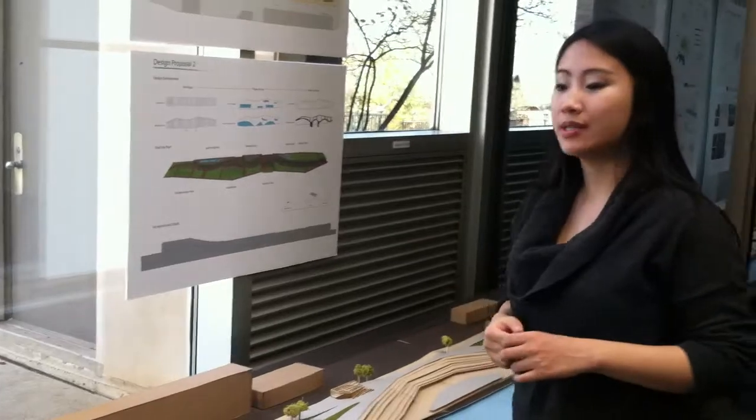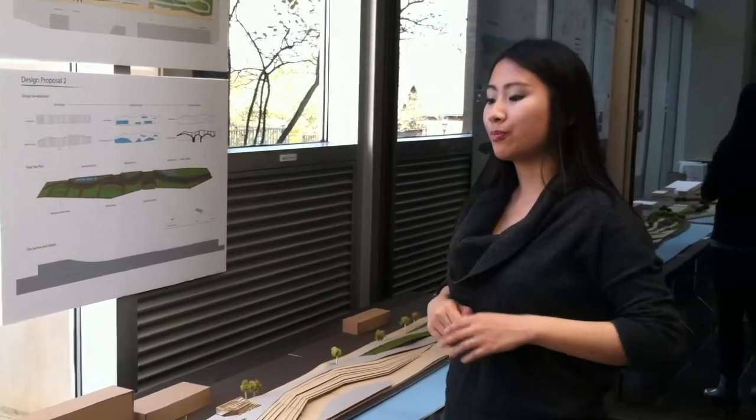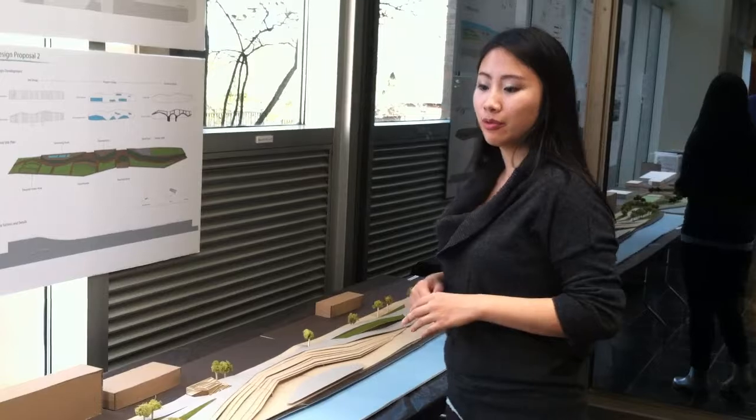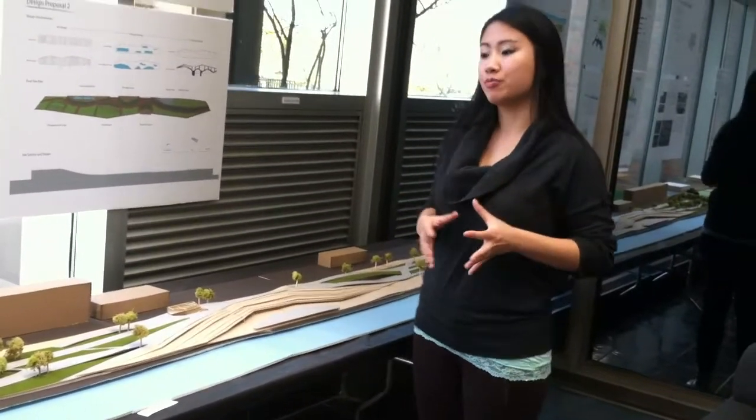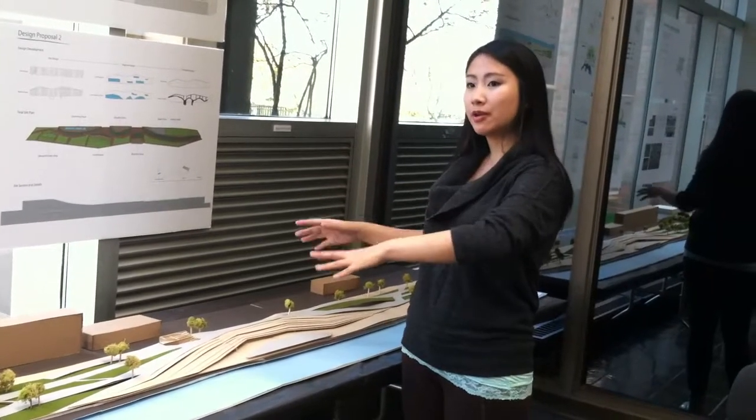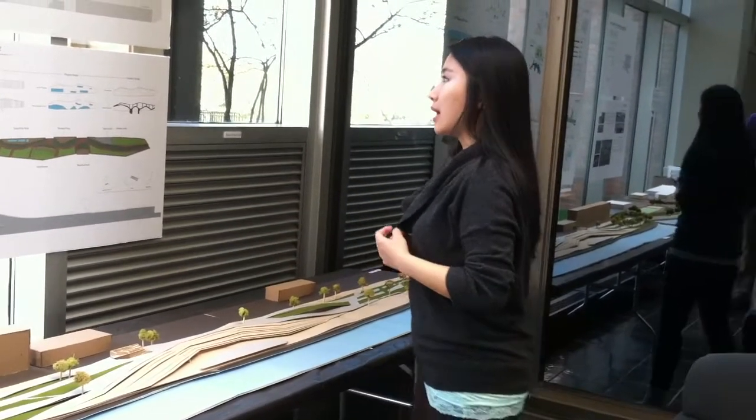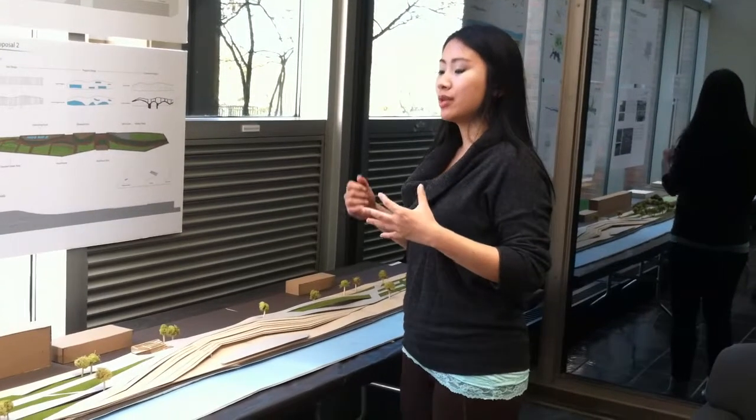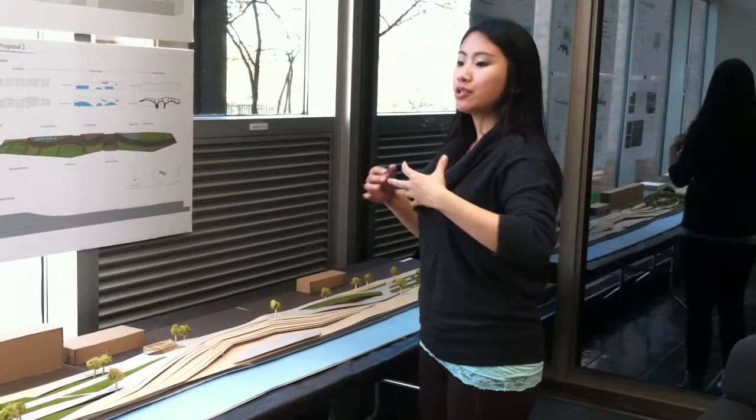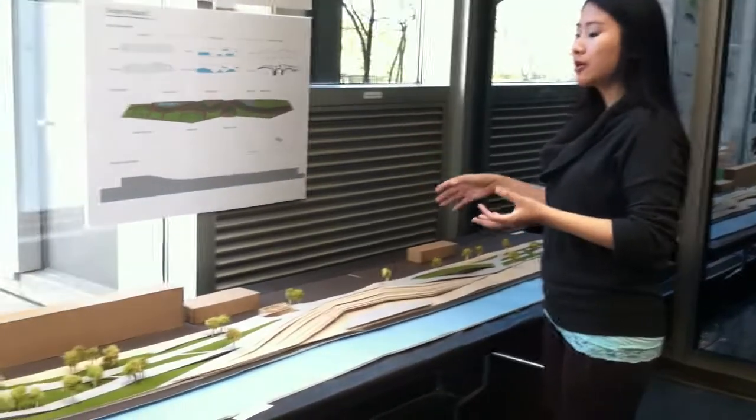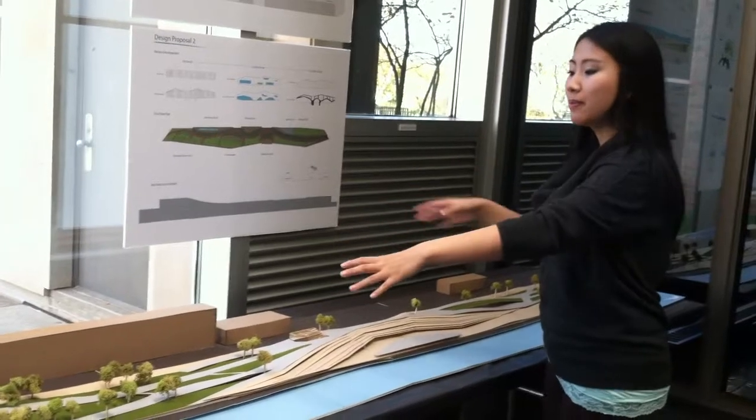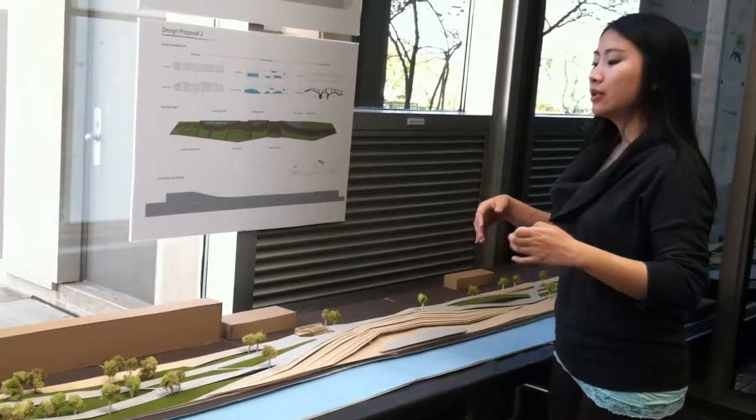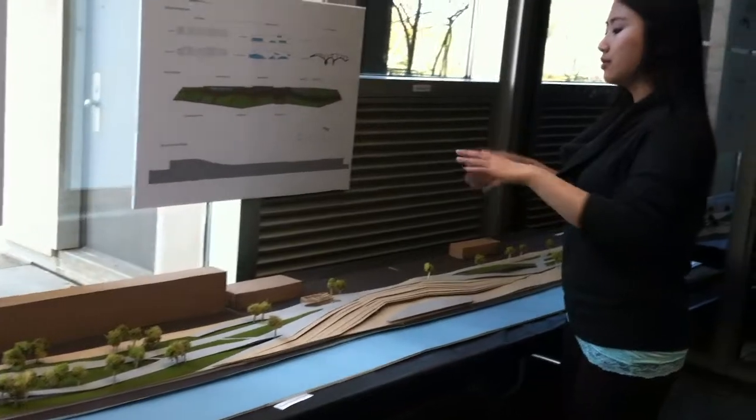And as for my design, after the research, we discovered that there is a large population of young families on the north side. So I thought it would be a good idea to draw a lot of that kind of user groups into the waterfront area on the south side. So my design started off with visualizing what people will be doing, which is their activity sequence on the park. And based on the sequence, I designated different programs and put it on the park so that different groups of users could be utilizing them in a different way.